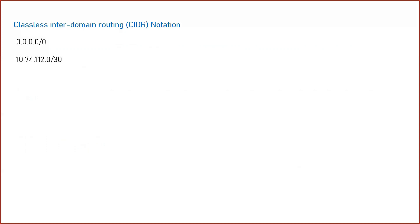Now let's discuss Classless Inter-Domain Routing (CIDR) notation. I have posted a detailed video on CIDR notation in my channel. To understand it briefly, when we specify a slash followed by a number with an IP address, we are specifying an IP range. For example, if you can see on the screen, I have specified 10.74.112.0/30. The 10.74.112.0 is the IP address, but what exactly is /30? That means we are specifying a range of IP addresses — a way to assign multiple IP addresses with scalability options in a subnet.